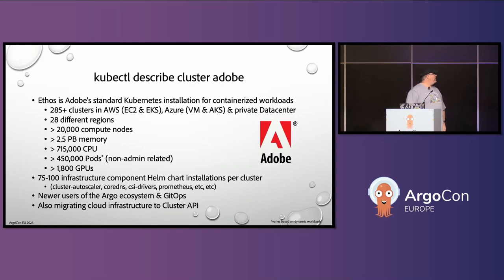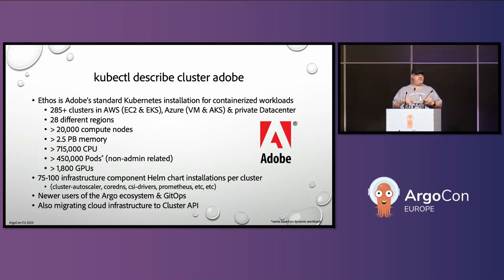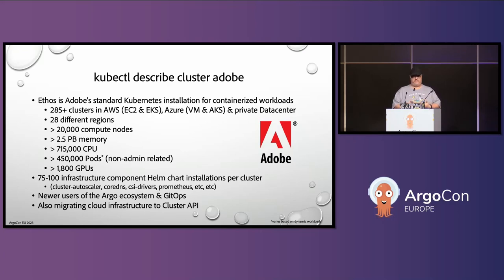A little bit about Adobe: we have a decent-size installation with quite a bit of compute, memory, and CPU workloads. We have around 75 to 100 different infrastructure components that get installed per cluster, and those vary depending on the cluster itself. We have close to 300 clusters right now and that is growing — at KubeCon North America last year we were around 235. We are somewhat newer users of the Argo ecosystem and GitOps for the infrastructure side, and we are migrating everything over to cluster API used alongside the GitOps system.